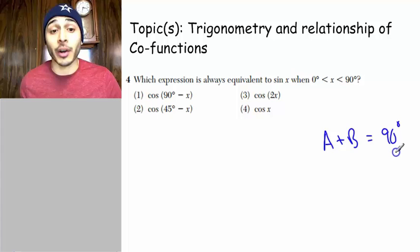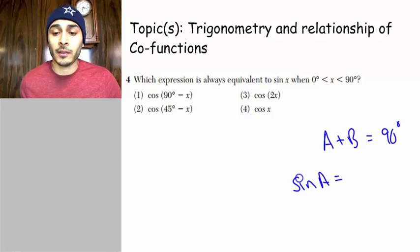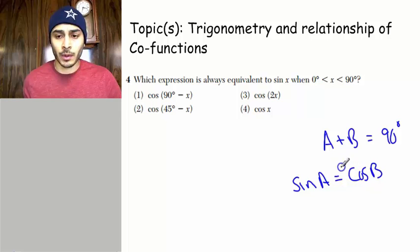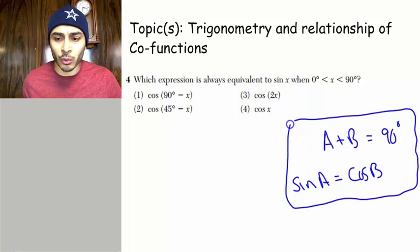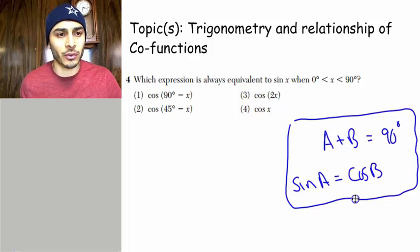It helps to know that if a plus b is equal to 90 degrees, if angle a and angle b are complementary, then the sine of a is equal to the cosine of b. That's something you're supposed to know going into this test. And I'm going to go ahead and show you some examples of that.